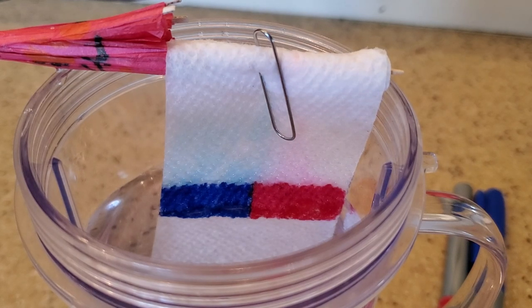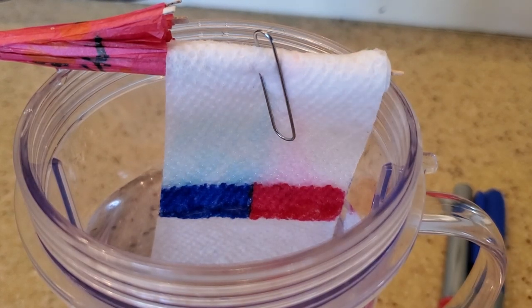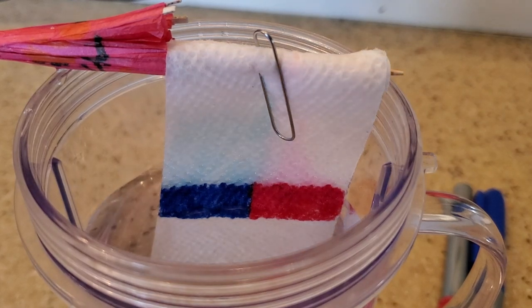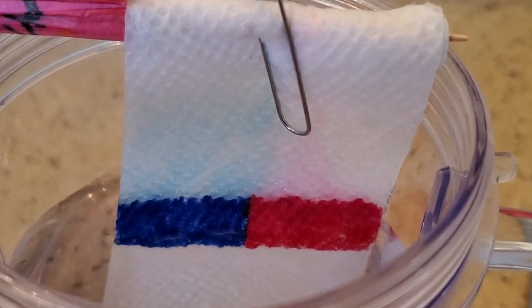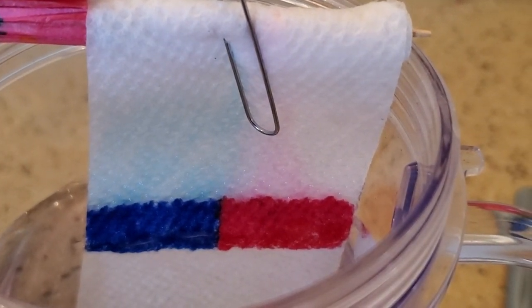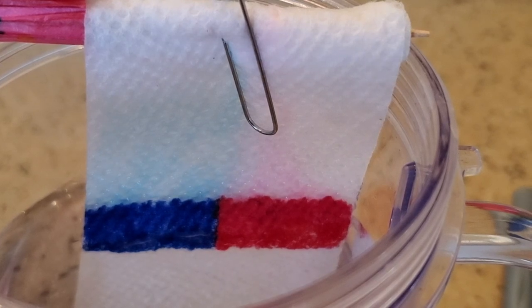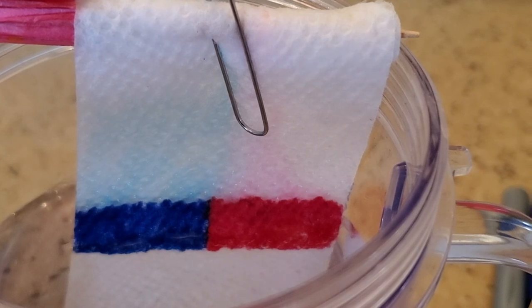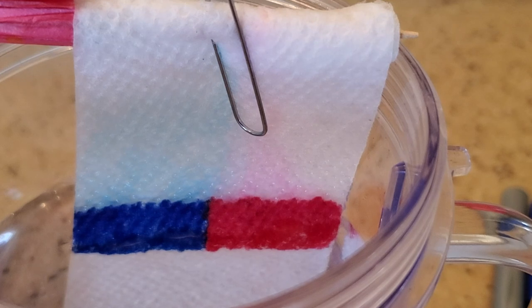Can you guys see it? You can also see how the paper towel is getting more wet at the top. Isn't that cool? Look at that difference. Look at the paper towel—you can see that there is a blue patch and a red patch. Isn't that cool? See the different colors.